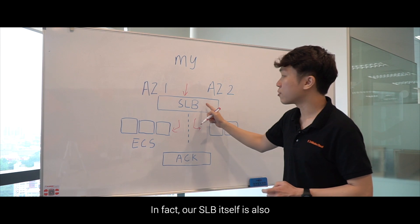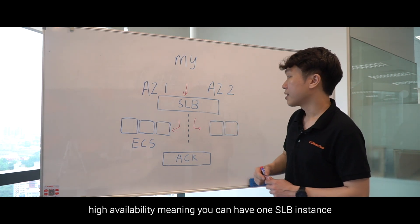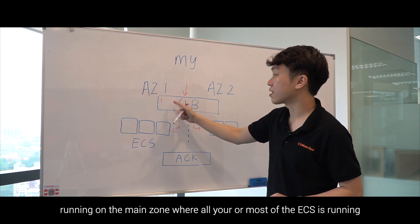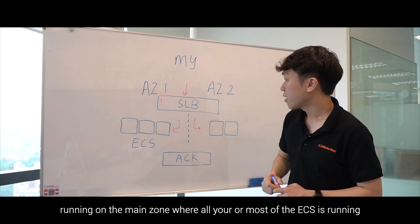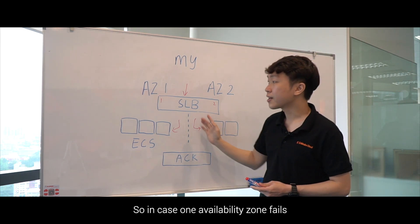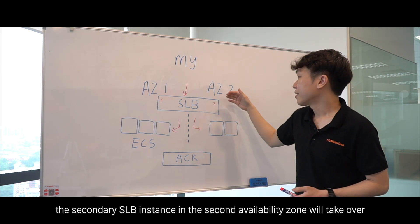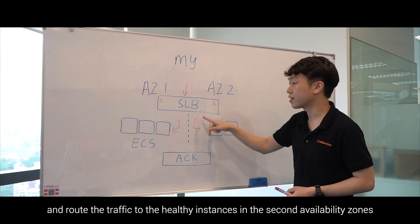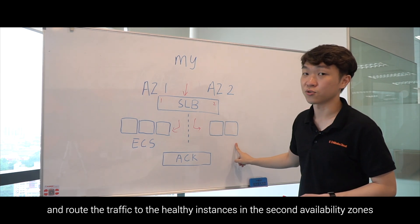The SLB itself is also high availability. You can have one SLB instance running on the main zone where most of your ECS is running, and a secondary SLB instance in the secondary zone. In case one availability zone fails, the secondary SLB instance in the second availability zone will take over and route traffic to the healthy instances there.